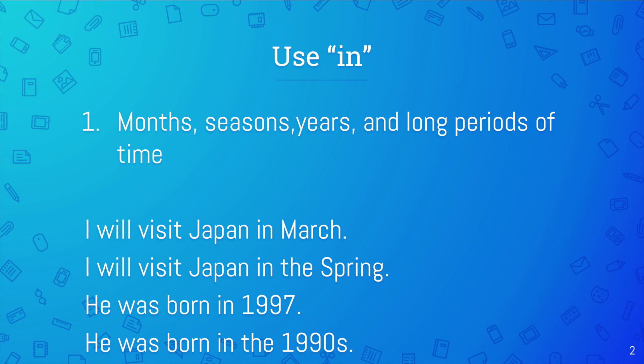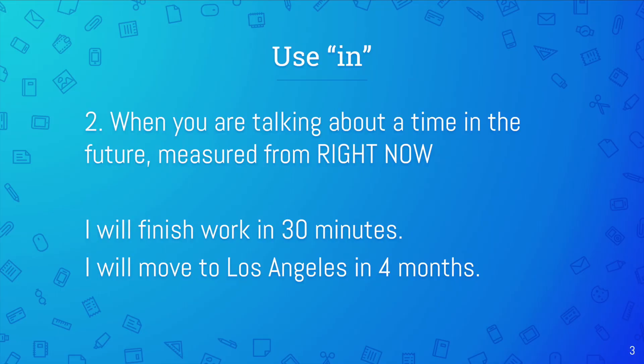I will visit Japan in March. I will visit Japan in the spring. He was born in 1997. He was born in the 1990s. The second way you can use 'in' is when you are talking about a time in the future measured from right now.